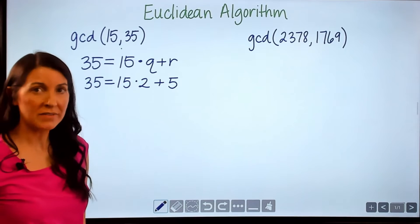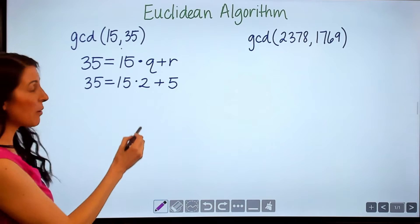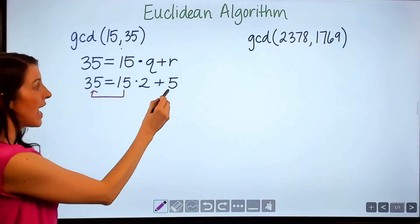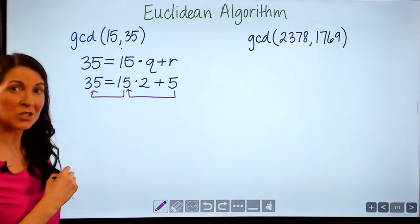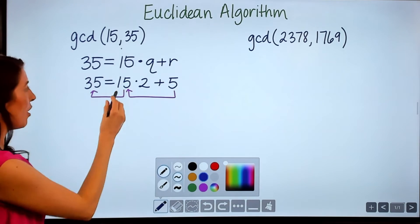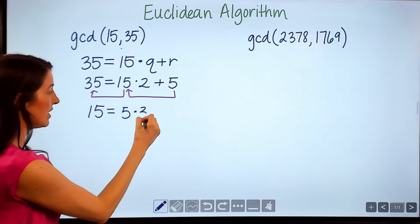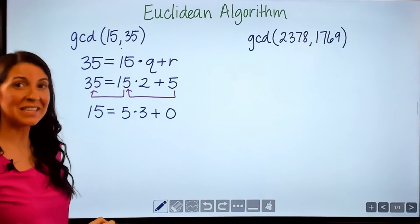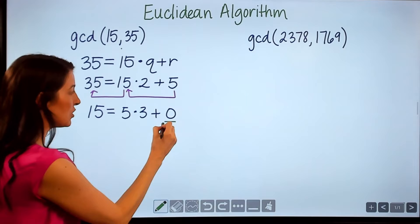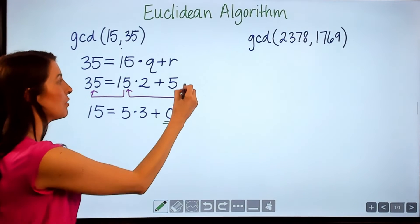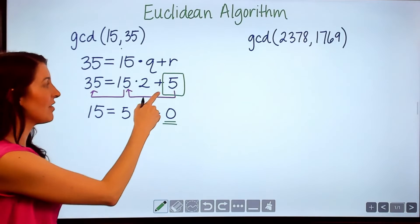Because I did not get a remainder of 0, I do want to repeat this process. When I repeat this process, these numbers are going to move — the number 15 moves to where 35 was, and the remainder of 5 moves to where the smaller integer was. So now I write 15 as 5 times 3, and the remainder would be 0. You repeat this process until you get a remainder of 0, and once you do, the greatest common divisor is the remainder from the previous step. So the greatest common divisor between 15 and 35 is 5.